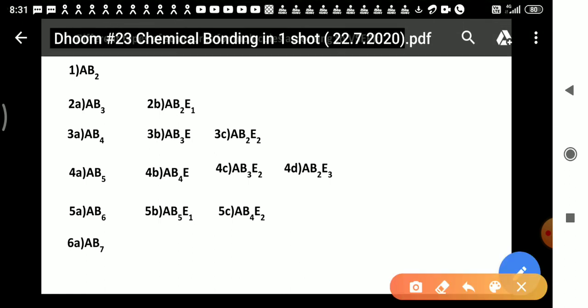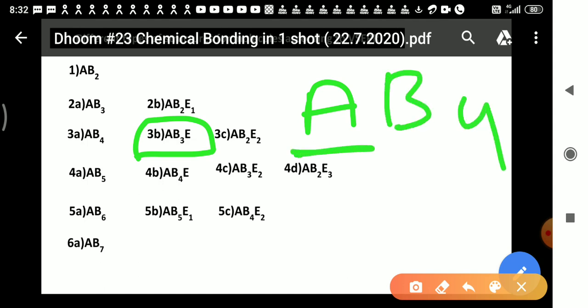For example, if we talk about AB4, pay attention - A will behave as a central atom and B4, the B atoms, will behave as surrounding atoms. So A is your central atom and the B atoms behave as surrounding atoms.